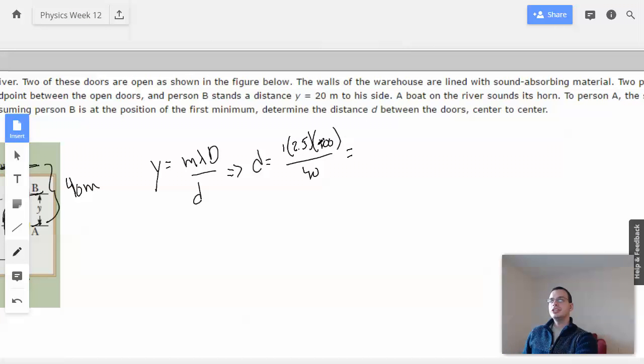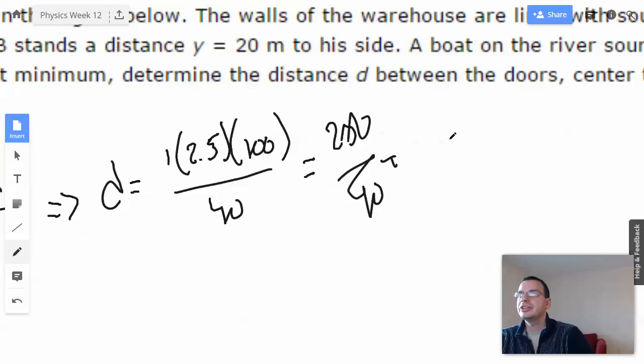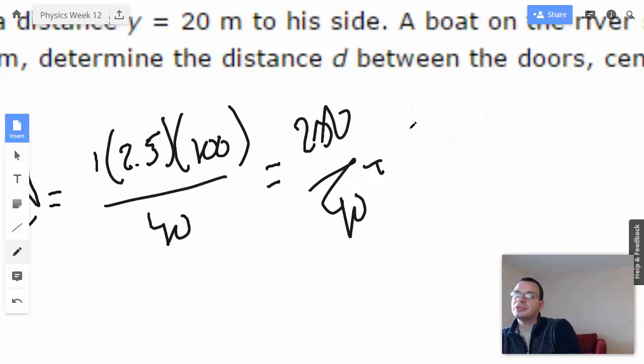So this is 250 divided by 40. That's going to be the same as 25 divided by 4, which is 6.25. 6.25 meters.